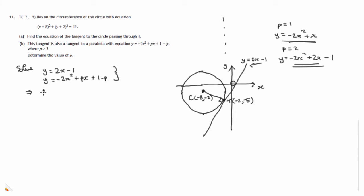So where does this meet this? We'll set the two things equal to each other. 2x - 1 = -2x² + px + 1 - p. And it looks like we're going to get a quadratic equation in x. So let's add 2x² to both sides, subtract px from both sides, subtract 1 from both sides, and add p to both sides.